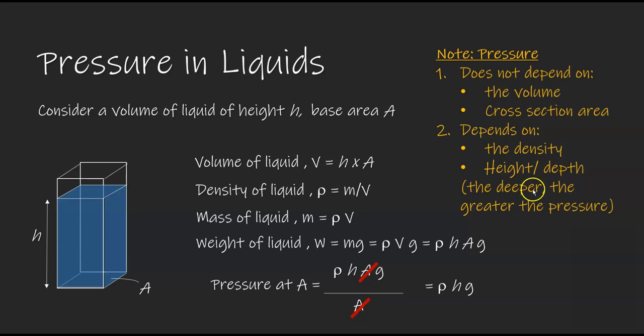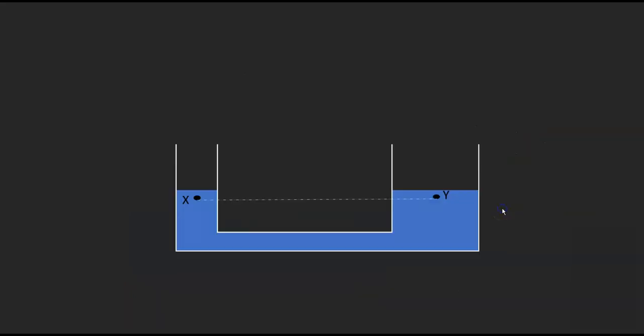So the deeper you go, the greater the pressure. This means that if you have a container like this, although the cross-sectional area on both sides are different, the pressure at any two points of the same vertical heights will be the same.